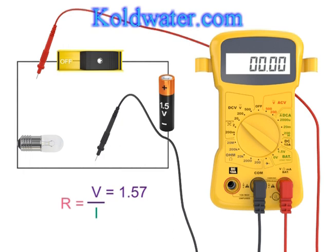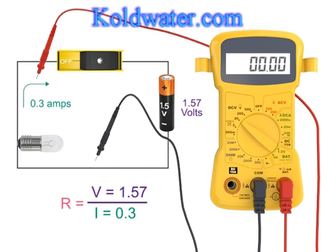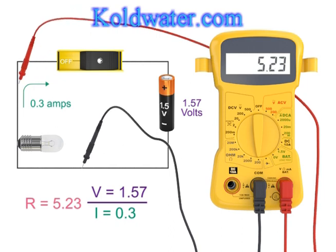Now, let's determine the resistance of the bulb in the circuit using the Ohm's law equations. If the current in the circuit is 0.3 amps, and the voltage across the battery is 1.57 volts, then the resistance of the light bulb would be 1.57 divided by 0.3, or 5.23 ohms. Let's check the actual resistance of the light bulb using the meter. Make sure the switch of the circuit is open or in the off position so no external power is in the circuit. Look for the ohm symbol, which is the Greek letter omega, and switch the meter to 200. Place the leads on either side of the light bulb. You should see a reading of 5.23 ohms.